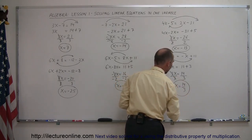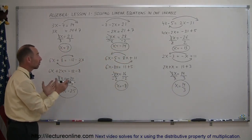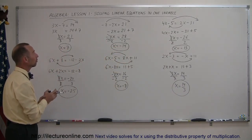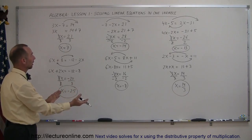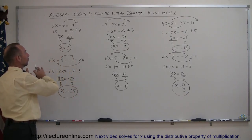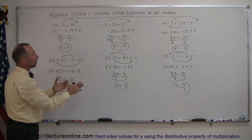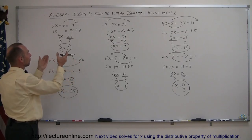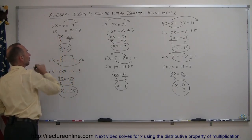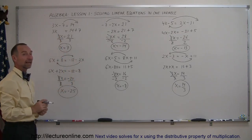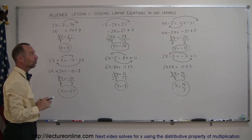And there you go — that's how you solve simple linear equations in one variable. Always move all terms that have the variable to one side, move all other terms to the other side, combine like terms, then divide both sides by the number in front of the variable, and you get the answer. On to the next lesson — we'll see you next time.